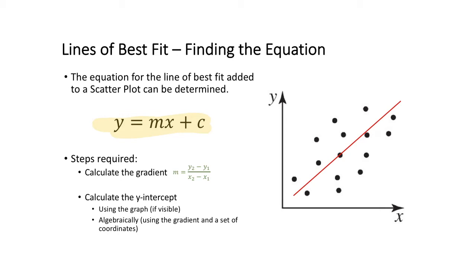Now the steps required is to calculate the gradient. To calculate the gradient we can use the formula of y2 minus y1 over x2 minus x1. Then once we have the gradient we can calculate the y-intercept. We can do that by either using the graph if our axes start and go continuously from zero, or we can calculate it algebraically by using the gradient and a set of coordinates from the graph and substitute in to find out what our c value is going to be.